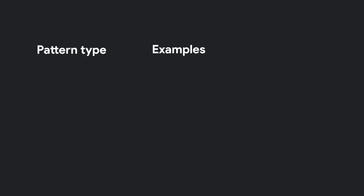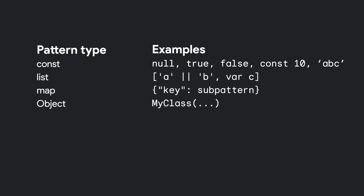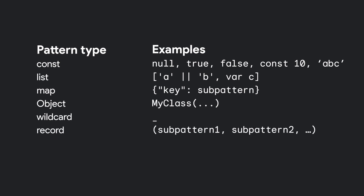Patterns come in a handful of varieties that collectively cover all the types of data that could exist in your application. This means there's const patterns, which match against themselves; list patterns, which match against lists and then recursively match against each element in the pattern; map patterns, which match against maps and then recursively match any keys specified in the pattern; object patterns, which match instances of a certain type and then optionally some or all of their properties; wildcard patterns, which always match; and lastly record patterns, which match the entirety of another record.